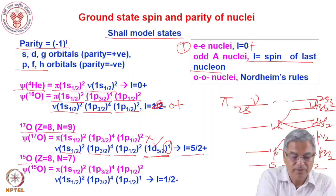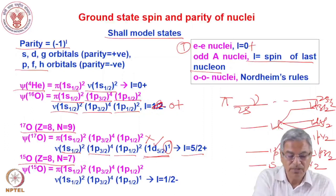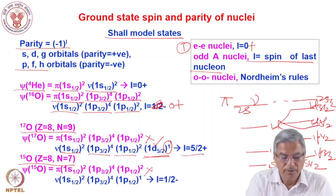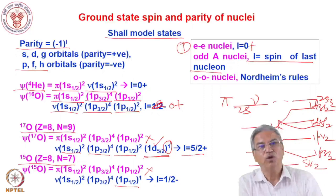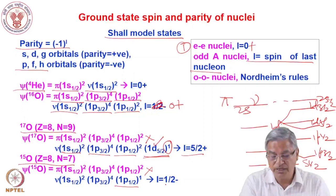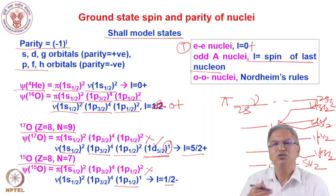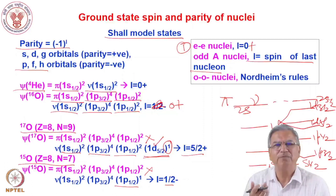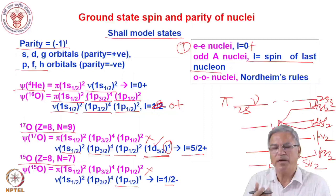For Oxygen-15 (8 protons, 7 neutrons), filling neutron levels: 1s½ gives 2, 1p3/2 gives 4, and the 7th neutron goes into 1p½. The 1p½ orbital is the last occupied orbital for the odd neutron, so spin J = ½ and parity is negative (p orbital). Thus the ground state spin and parity is ½−. This is how we derive spin and parity by identifying the J value of the last occupied orbital.